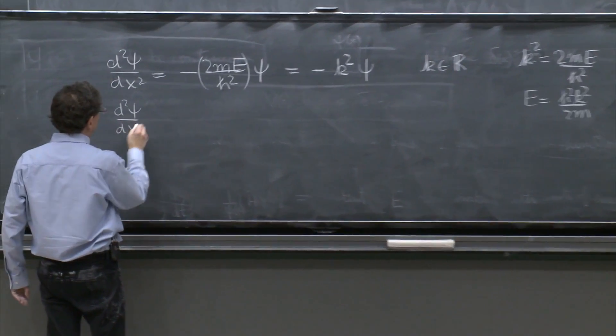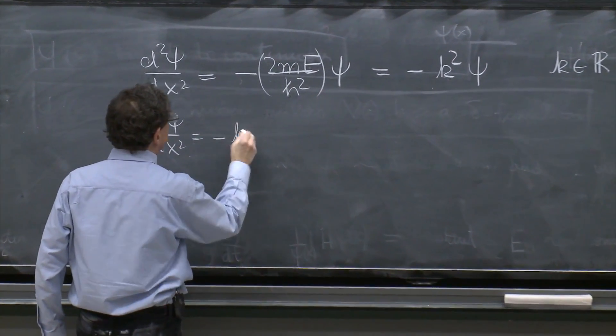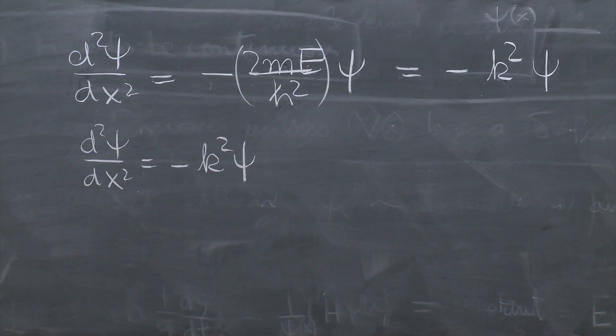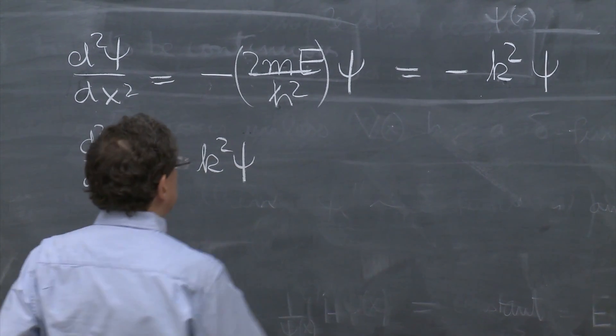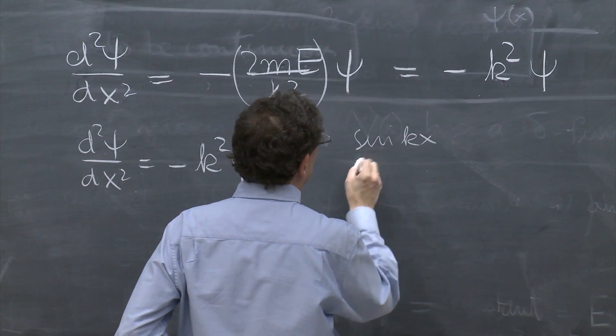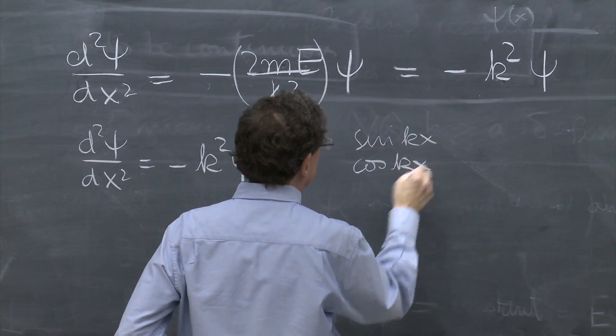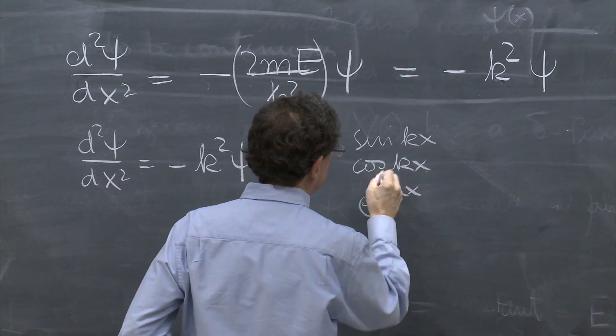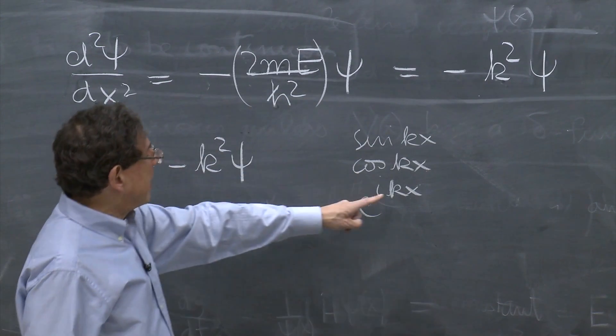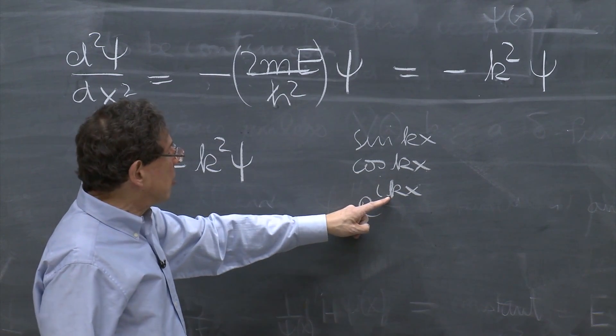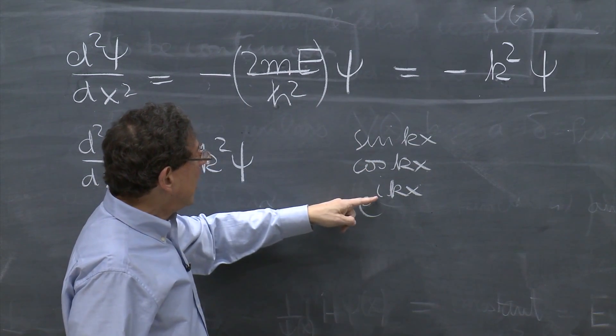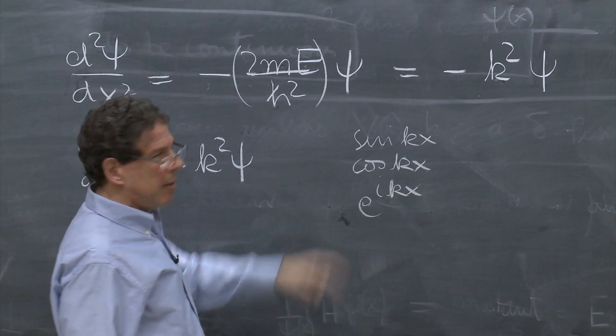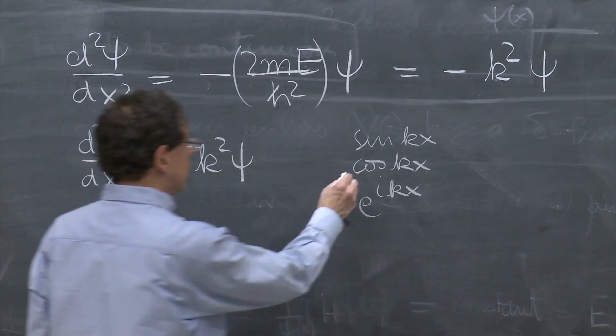And now you just have to solve this: d second ψ/dx squared is equal to minus k squared ψ. Well, those are solved by sines or cosines of kx. So you could choose sine of kx, cosine of kx, e to the ikx. And this is kind of better or easier, because you don't have to deal with two types of different functions. And when you take k and minus k, you reproduce these two.